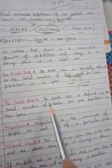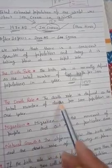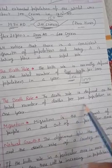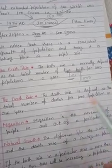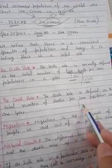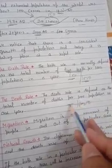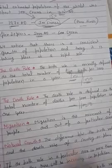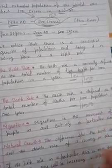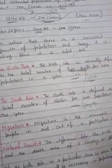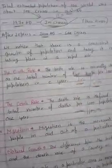Death rate is defined similarly — it is the total number of deaths per thousand population in a year. So birth rate counts live births per thousand persons, and death rate counts the deaths per thousand persons per year.